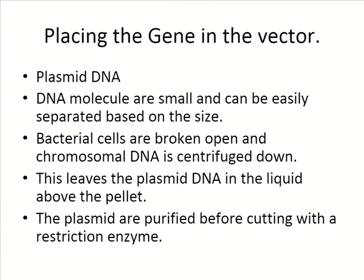Placing the gene in the vector involves plasmid DNA, which must be small and easily separated by size. Bacterial cells need to be broken open, and chromosomal DNA must be centrifuged down to isolate the plasmid of interest. This leaves the plasmid DNA in the liquid above the pellet during centrifugation. The plasmid can then be purified before cutting with a restriction enzyme.